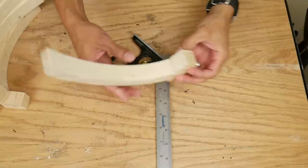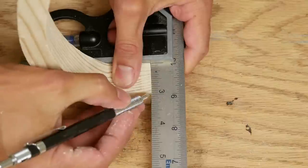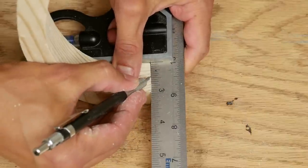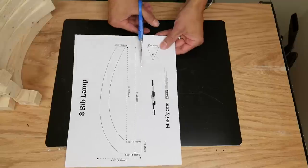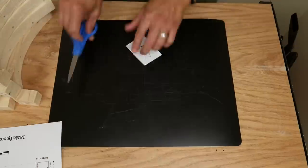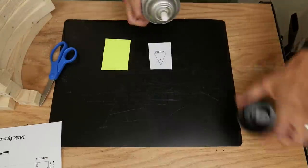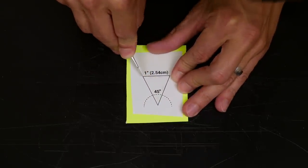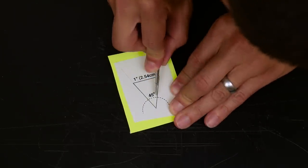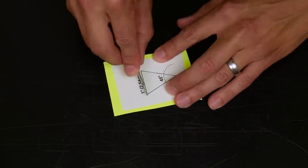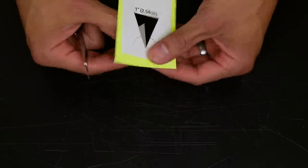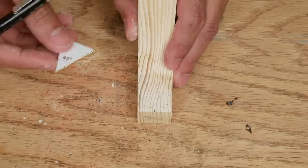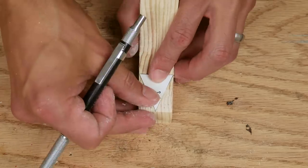I marked the center of the bottom of each wood rib. I don't have a protractor so I printed an isosceles triangle with a 45 degree tip and stuck it to a piece of poster board with spray adhesive. Then used that to mark a 45 degree angle on the bottom of each rib.